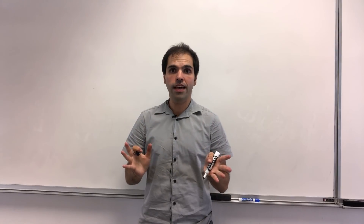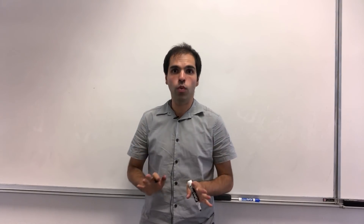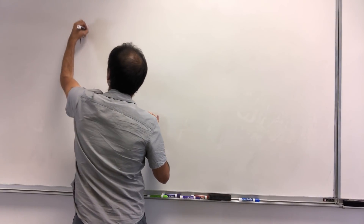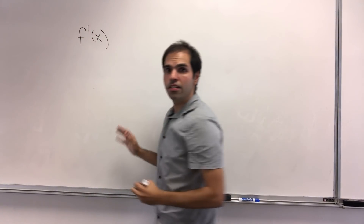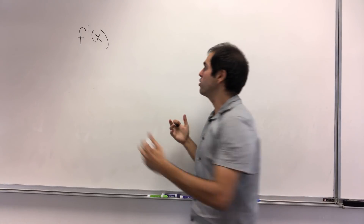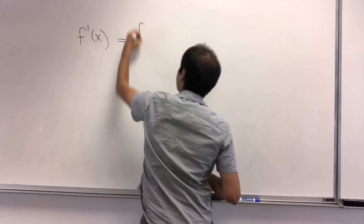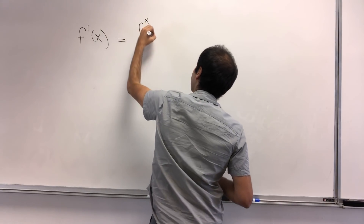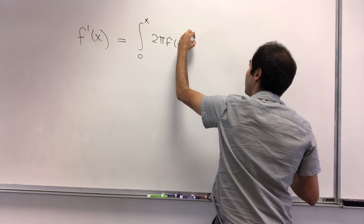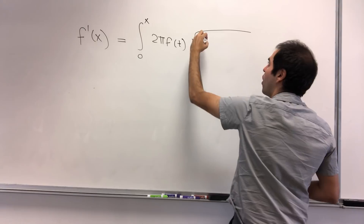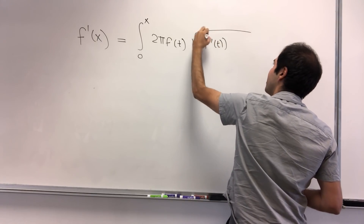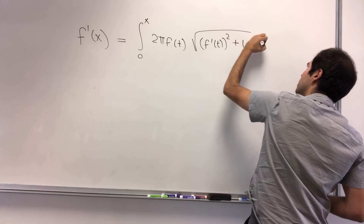So what exactly do we want? We want to find one function f such that the derivative of f — so f prime of x — equals the surface area from 0 to x, which is given by the integral from 0 to x of 2π f(t) times the arc length element √(f'(t)² + 1) dt.